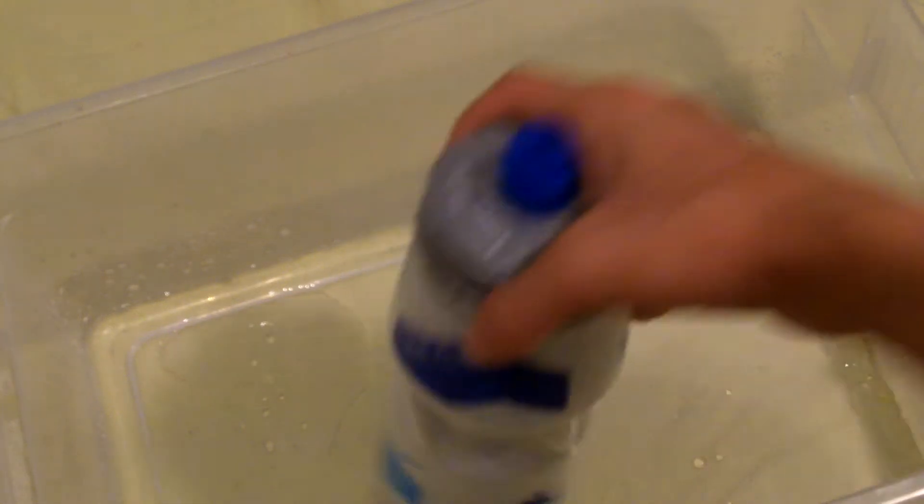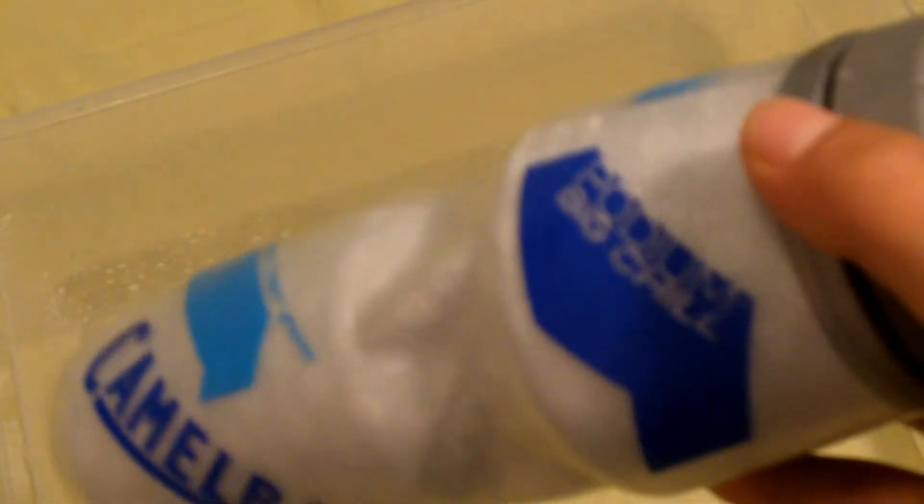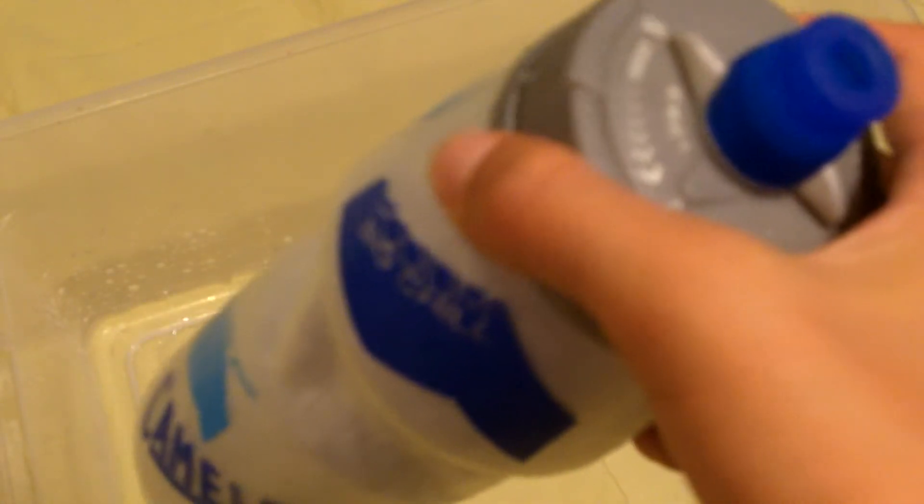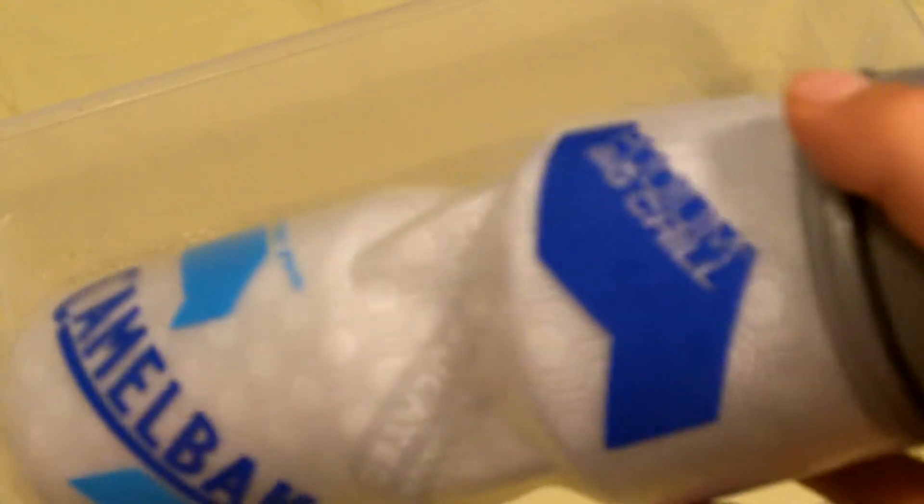Today I'm going to be doing a review on the Podium Big Chill water bottle. Now there is a Camelback Podium Chill, which is a smaller version, and this Camelback Podium Big Chill is 25 ounces. So I'm guessing the smaller one is like 16 or 18.